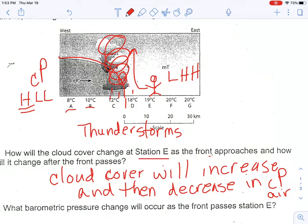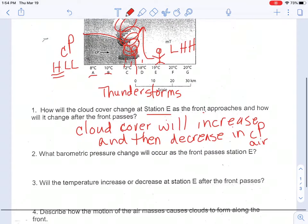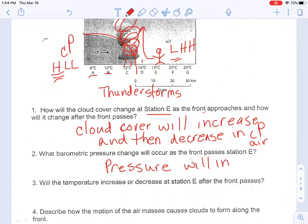Let's try question two. Question two says: what barometric pressure change will occur as the front passes station E? Right now we can see that at station E, this person is in low pressure. When that front moves over him, he's going to be in the high pressure of that continental polar air mass, so the barometric pressure will increase. We're going to just say pressure will increase.